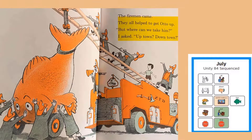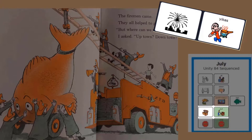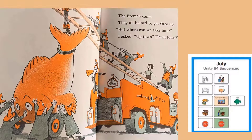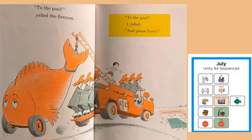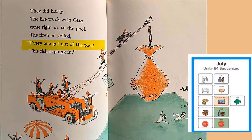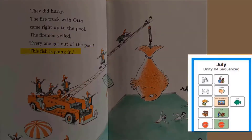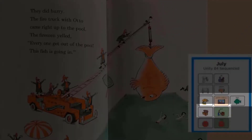The firemen came. They all helped to get Otto up. But where can we take him? I asked. Uptown? Downtown? Yikes! Where are they going to put that fish next? To the pool! yelled the fireman. To the pool! I yelled. And please hurry! They did hurry. The firetruck with Otto came right up to the pool. The fireman yelled: everyone get out of the pool — this fish is going in! Yikes! They're going to put Otto in the pool.